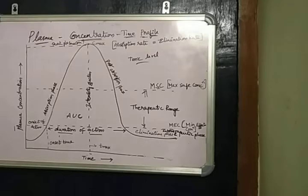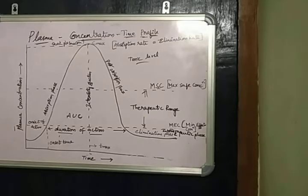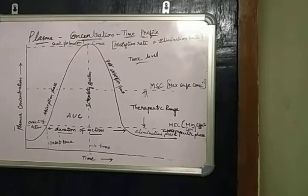In the plasma concentration-time profile, once the drug is administered, a plot is obtained between the plasma concentration on the y-axis and the time profile on the x-axis. From this, we observe various pharmacokinetic and pharmacodynamic parameters.